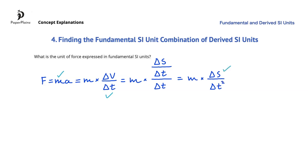S distance is a fundamental SI quantity, so now our equation only has fundamental SI quantities. All we have left is to write out the units of these quantities. m is mass, and it is in kilograms. S is distance, it is in meters. And t is in seconds, and since delta T is in the denominator and is to the power of 2, we get S to the power of negative 2. So the fundamental SI unit combination of force is kilograms times meters times seconds to the power of negative 2. Or in other words, kilograms times meters per second squared.